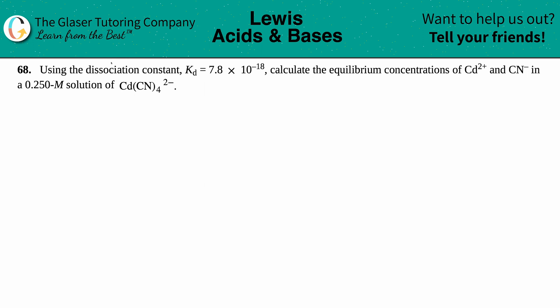Number 68: Using the dissociation constant Kd which is equal to 7.8 times 10 to the negative 18th, calculate the equilibrium concentrations of the cadmium ion Cd2+ and the cyanide ion CN- in a 0.250 molar solution of Cd(CN)4 2-.